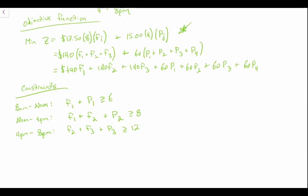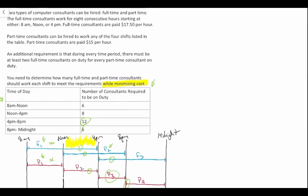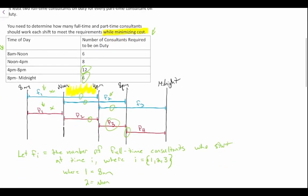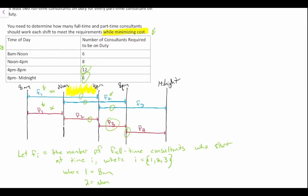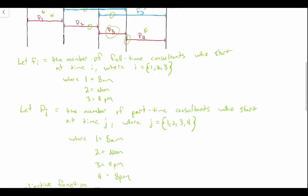Finally, from 8 p.m. to midnight we need at least 6 staff. The people on duty during that period are the full-time staff who started at 4 p.m. (F3) and part-time staff who started at 8 p.m. (P4). So the constraint is: F3 + P4 ≥ 6.